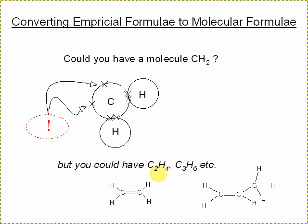But you could have C2H4 or C3H6. There's the structures drawn there. They're still in the ratio 1 to 2 for the carbon to hydrogen. But carbon's making 4 bonds. Hydrogen's making 1 bond. Everything looks nice there.